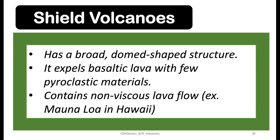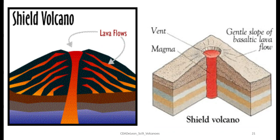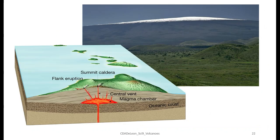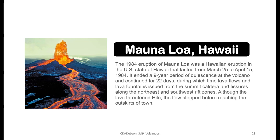Volcanoes have different types based on shape. Number one is the shield volcano — it has a broad, dome-shaped structure and expels basaltic lava with few pyroclastic materials. It contains non-viscous lava flow. An example is Mauna Loa in Hawaii, which erupted last in 1984.